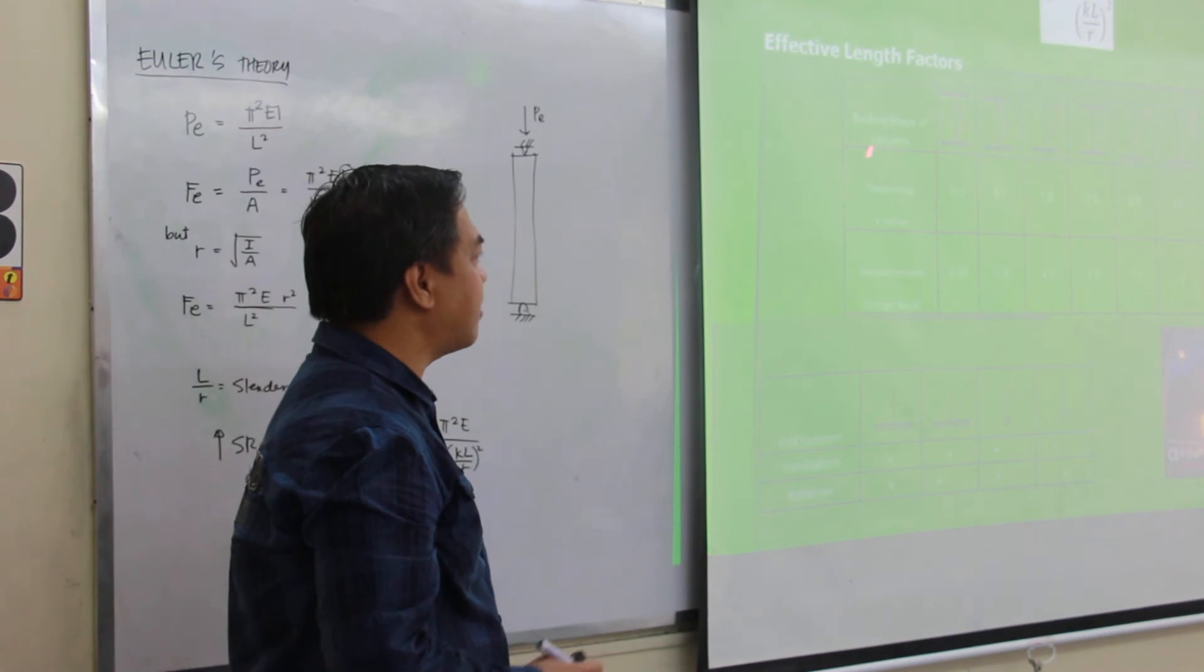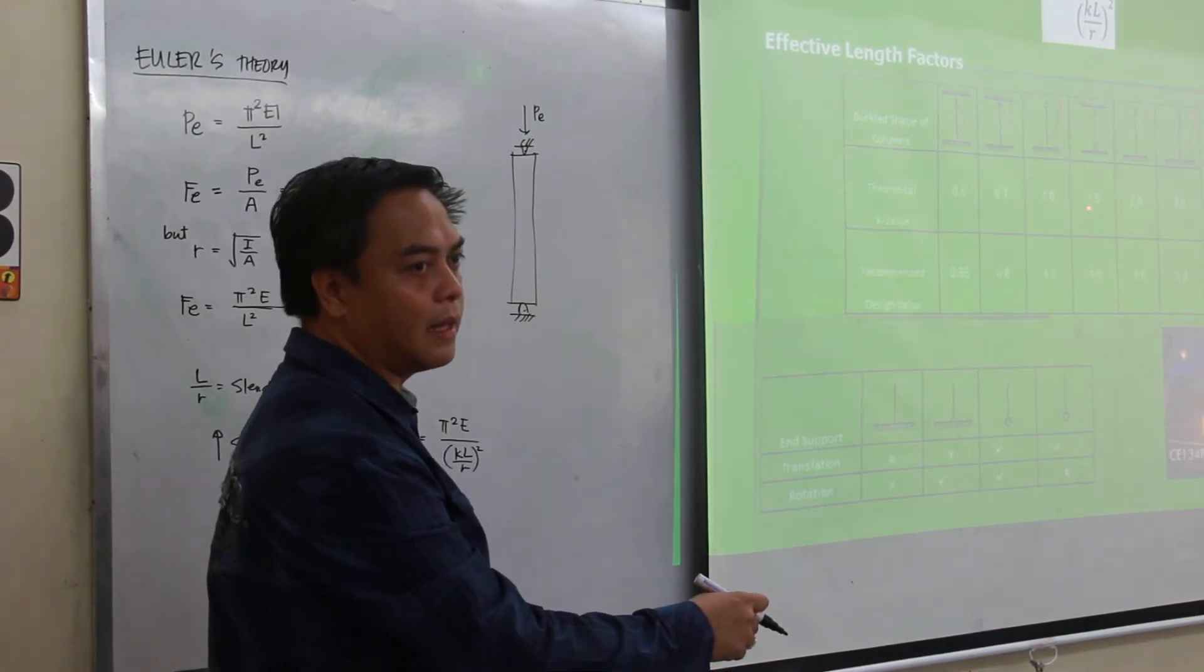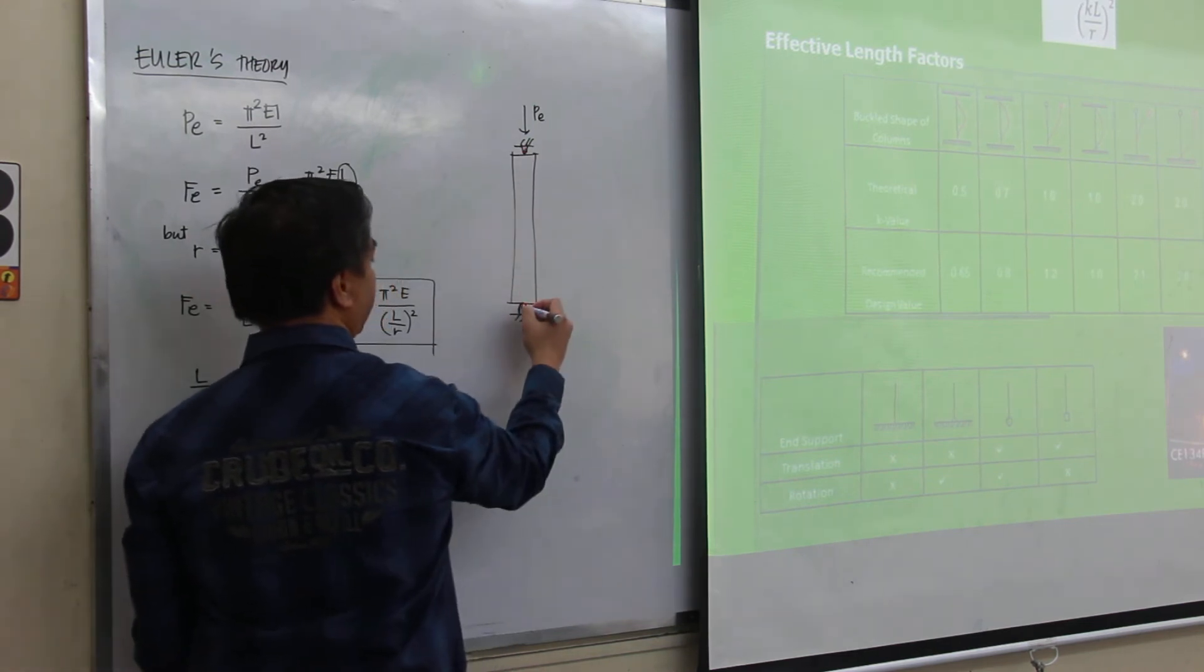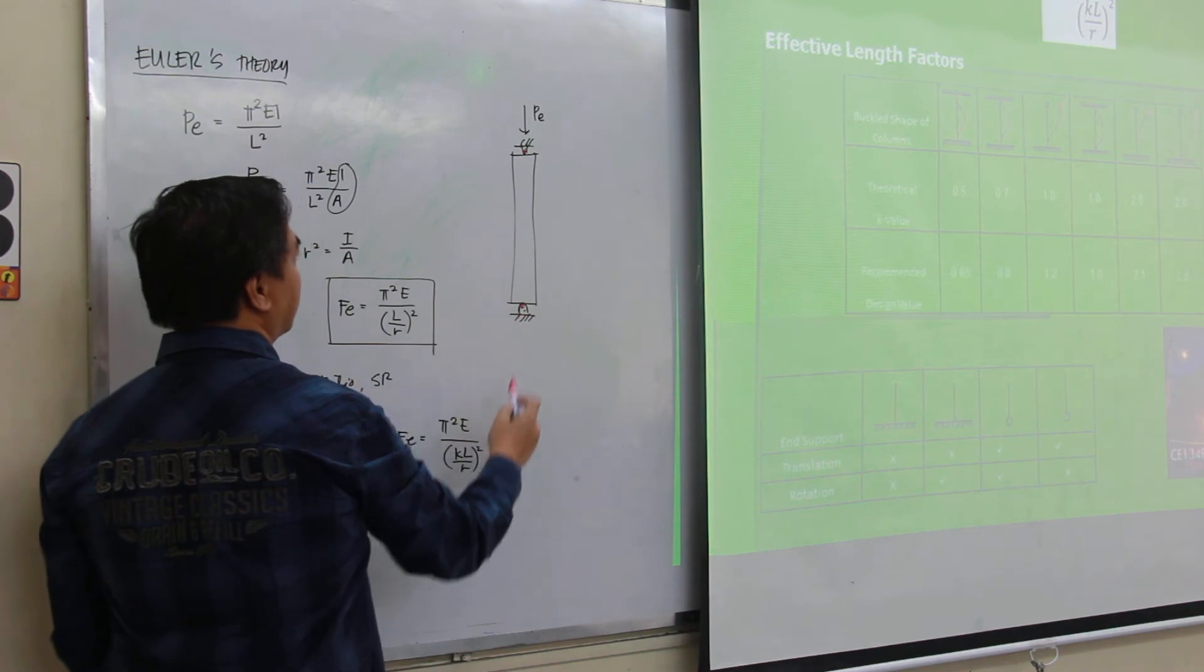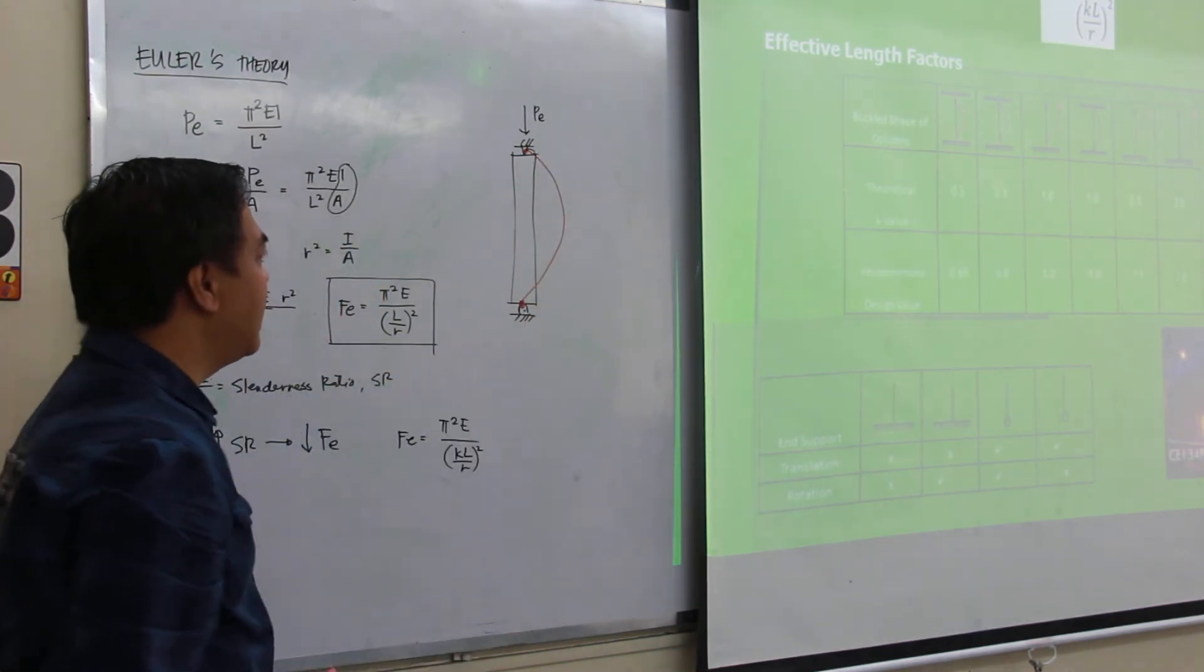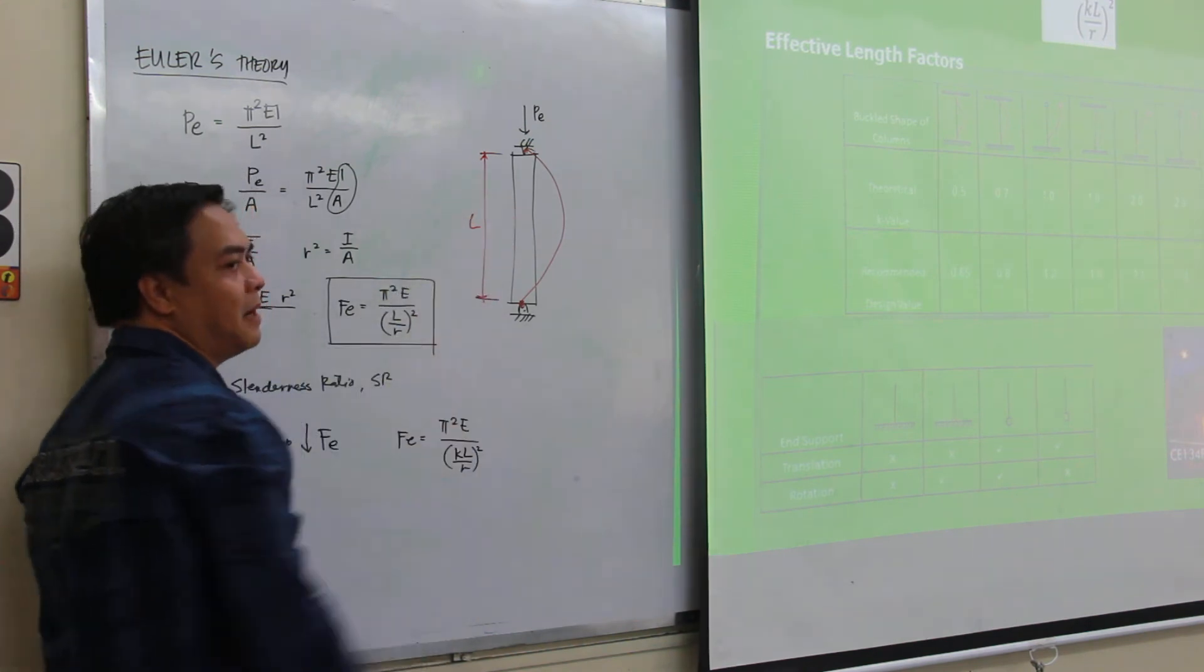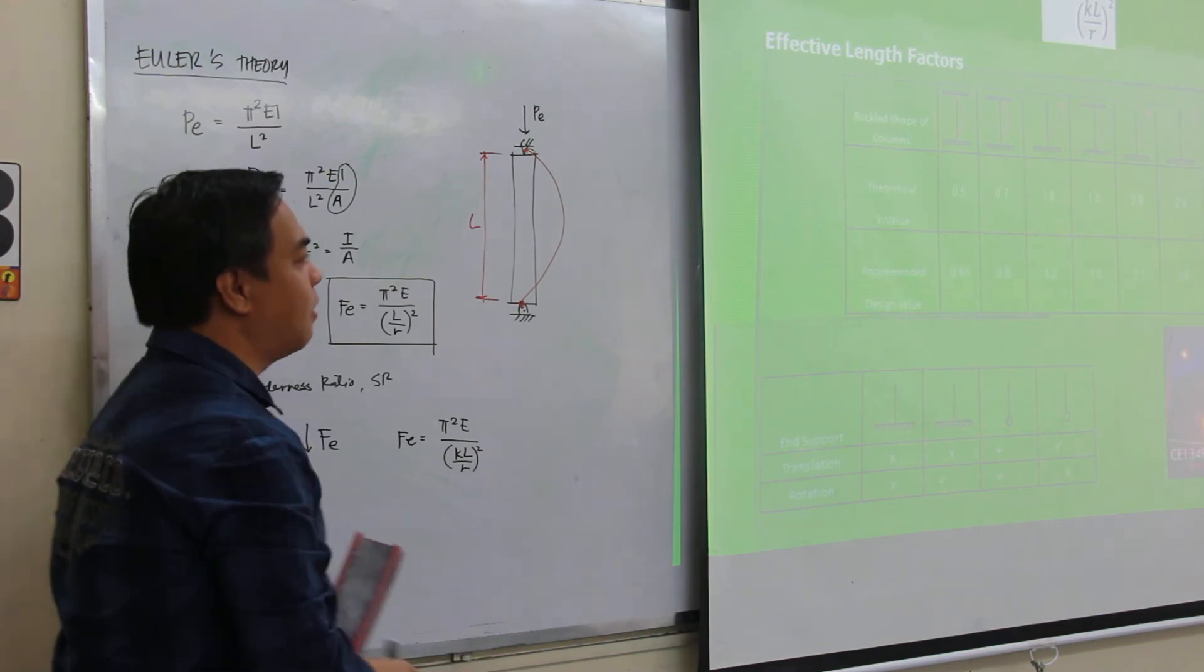Now, so what do you mean by that effective length factor? Let's say for this case that I have a both-end hinge. As you can see, for both-end hinge, this one, the K value is equal to 1. What does it mean by that 1? So if you apply a compressive force there, since the supports are hinges or pin, whenever it is pin, there will be no translation, but there will be a rotation. So if there will be a rotation of these joints, the buckle shape of this member would be something like this. So with this buckle shape, as you can see, if this would be the overall length or the actual length of the member, the question is, how much of that total length experiences buckling? How much of the total length experiences buckling? In terms of percentage? 100%, right? All throughout of its length experiences buckling. 100% means 1. That's why it's 1.